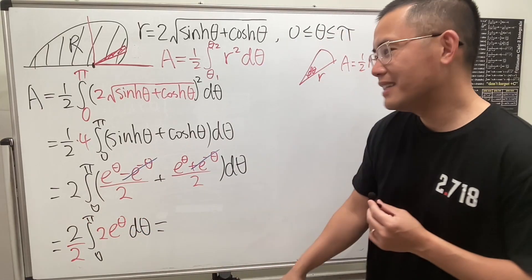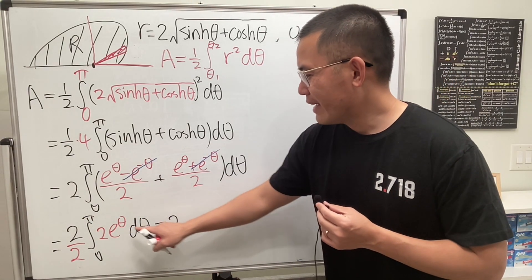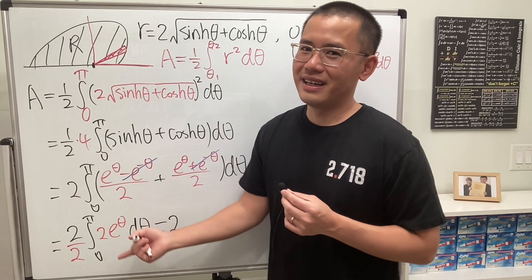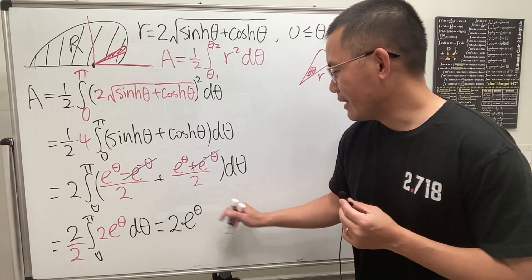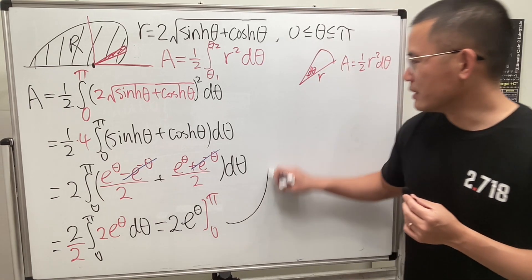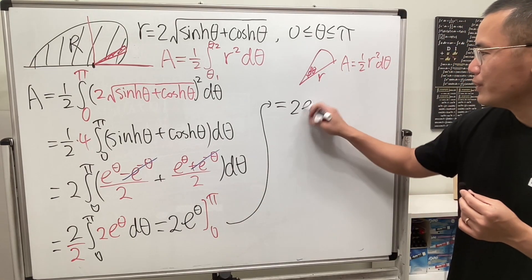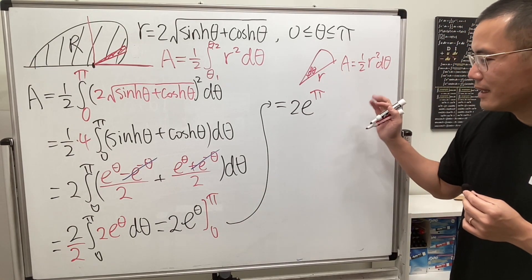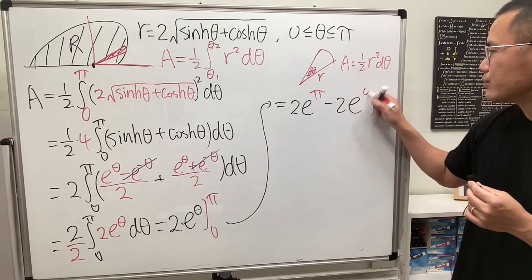Let me just try to make it clear for you guys. And then integrating e to the theta in the theta world is just e to the theta. And now we are going to go from 0 to pi. So as you can see, this right here, putting the pi, 2 e to the pi. And then minus putting the 0, so 2 e to the 0.